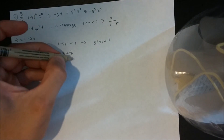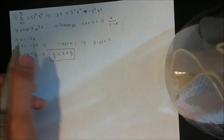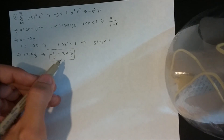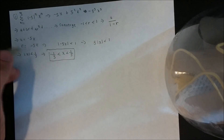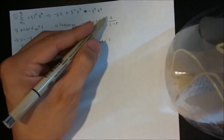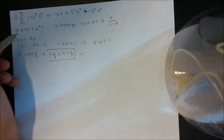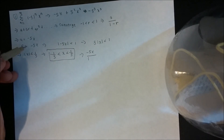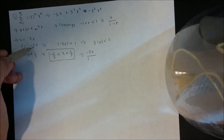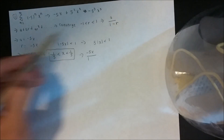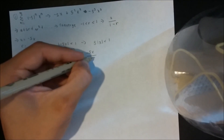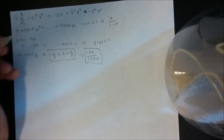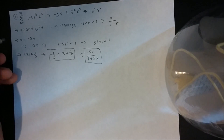So this would be the values of x for which the series converges. Now we want to find the sum of the series for those x values. We use the formula a over 1 minus r: a is negative 5x, so that gives us negative 5x over 1 minus negative 5x, which is negative 5x over 1 plus 5x. And this is the sum of the series for those x values.